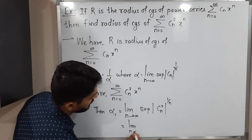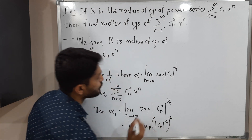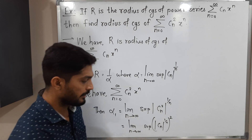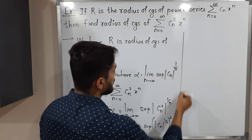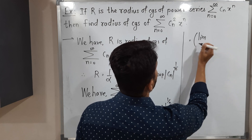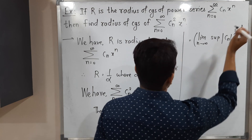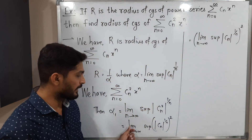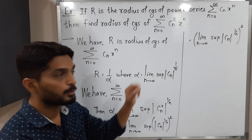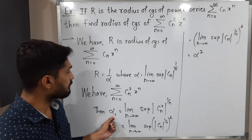So α₁ = limit as n tends to infinity of supremum of |cₙ²|^(1/n). By rules of indices, this equals limit as n tends to infinity of supremum of |cₙ|^(1/n) raised to the power 2, which equals (limit as n tends to infinity of supremum of |cₙ|^(1/n))². That inner limit is α, so α₁ = α².